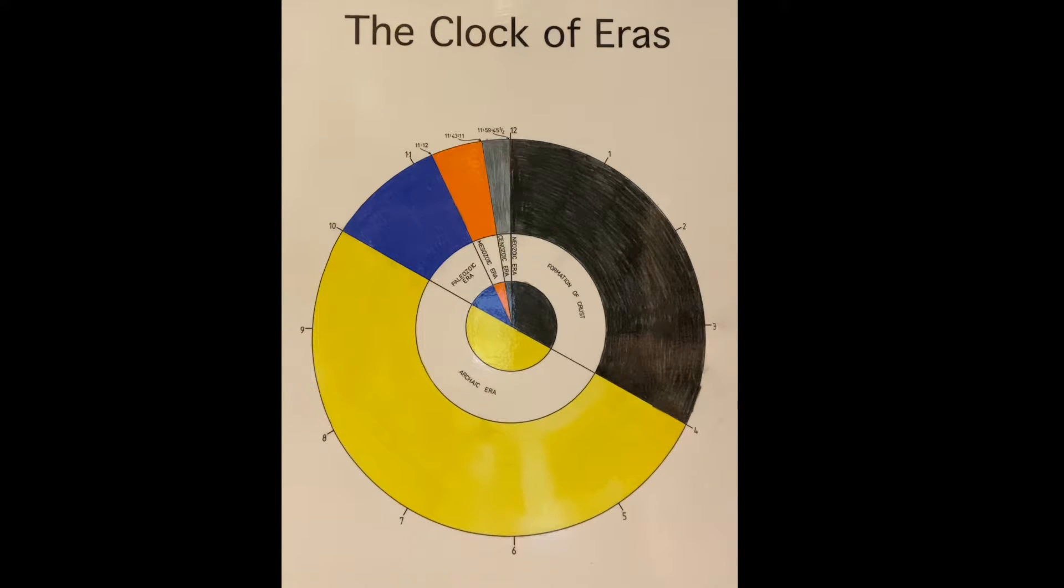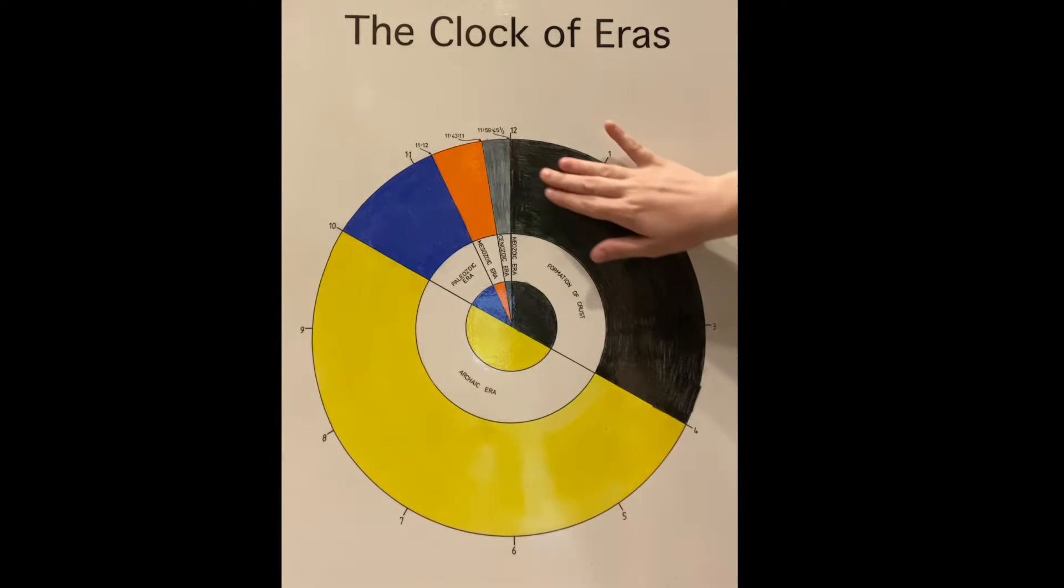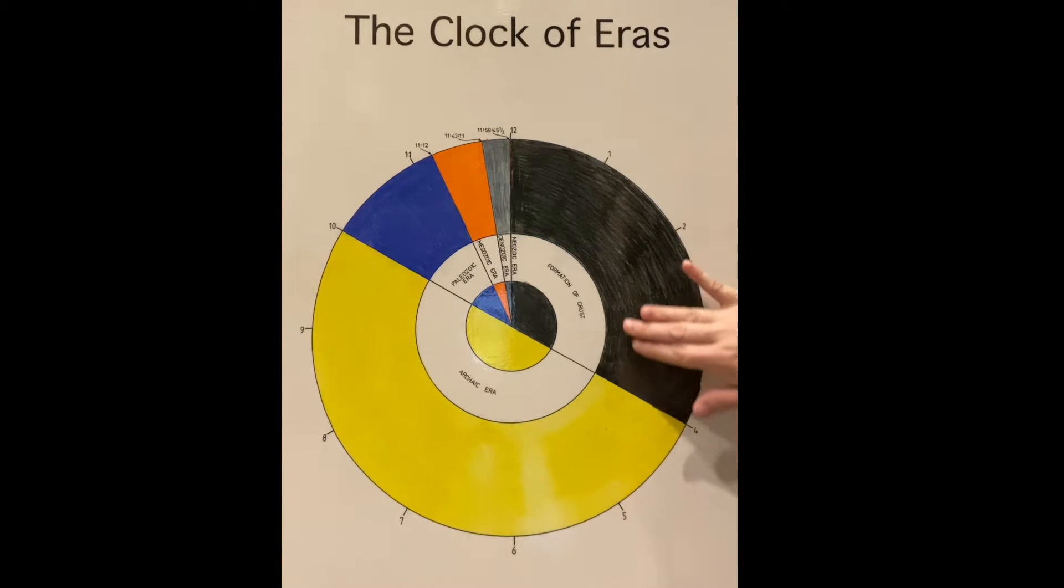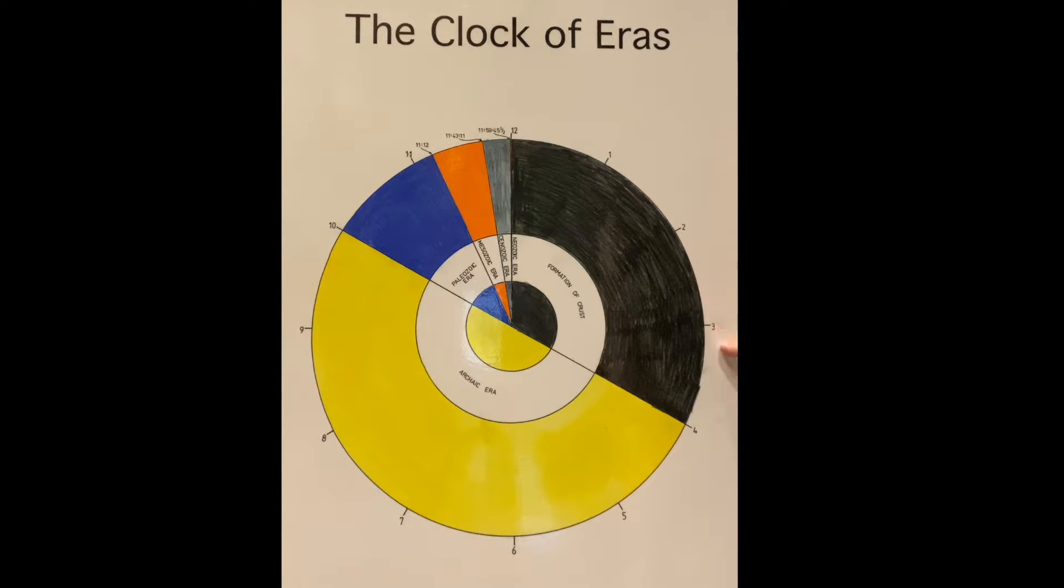It did that for a while and then it started to actually rain and it was cool enough that the rain could stay on the surface of the planet. Well, this black area here, formation of the crust, this is when all the volcanoes were happening and things getting hot and going up and cooled and going back down and everything was settling and cooling. That's this black part of our clock. And that lasted from 12 to 1, 1 to 2, 2 to 3, 3 to 4. So that was four hours of our 12 hour day.